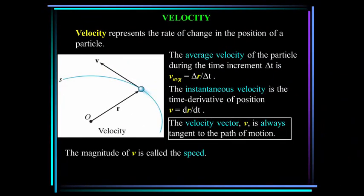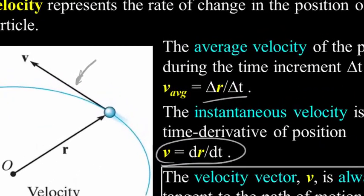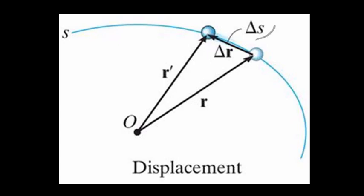Velocity represents the rate of change in the position of a particle. The average velocity during time increment delta T is delta R over delta T. The instantaneous velocity is the time derivative of the position, dr/dt. Note that the velocity vector is always tangent to the path of motion. The magnitude of V is called speed, and speed can be obtained by differentiating the path function S as dS/dt.